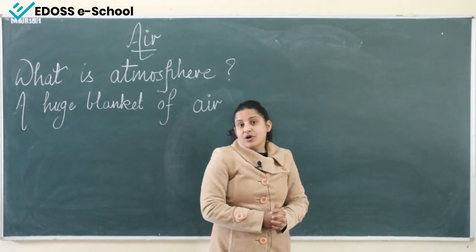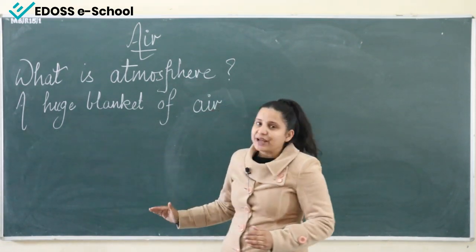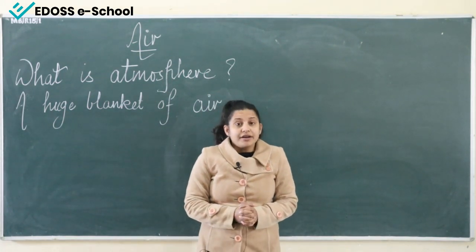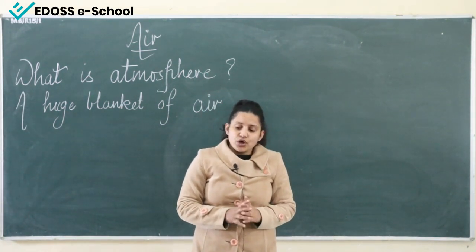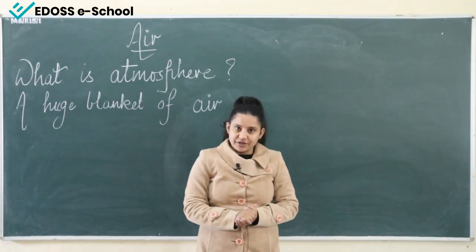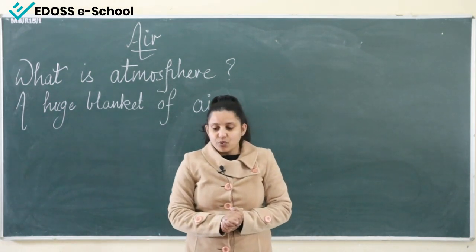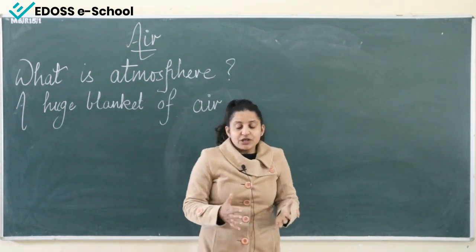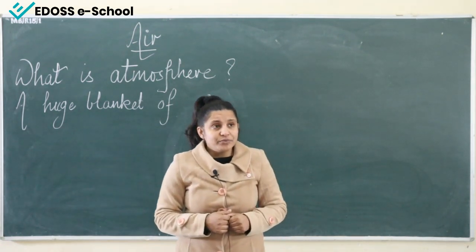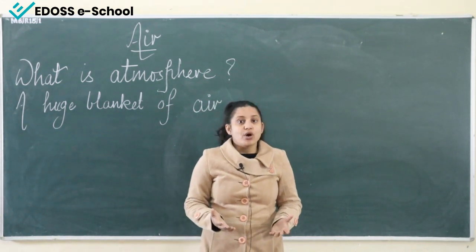What do you mean by atmosphere? A huge blanket of air — that is atmosphere. Our earth is surrounded by a huge blanket of air called atmosphere. The atmosphere provides us air to breathe and apart from that, atmosphere protects us from the harmful rays of the sun, that is ultraviolet rays.